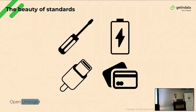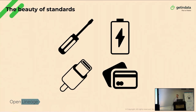Before we start, let's do some quick warm-up and try to figure out together what do these things have in common. The answer is pretty short: we all agreed that some important things should follow certain standards to make our life easier — whether it's a T-form, a screwdriver, the shape of the USB cable, or the size of a credit card. Let's keep that in mind for a while.